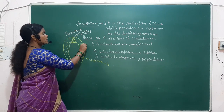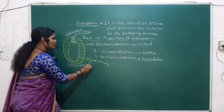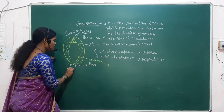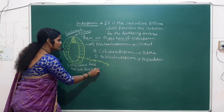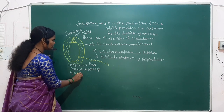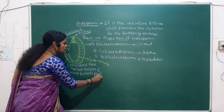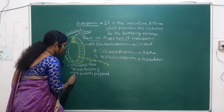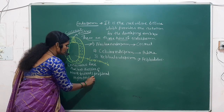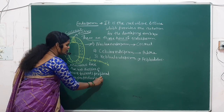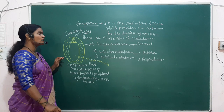So nuclear endosperm has continuous free nuclear division occurring, which moves towards the peripheral region, producing a large vacuole.